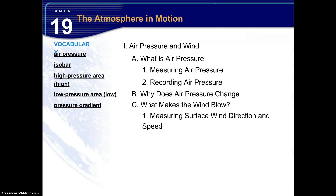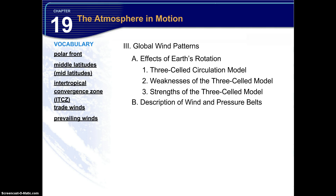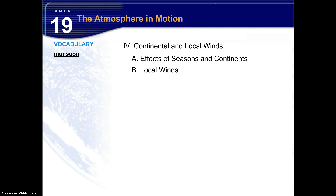Let's review all four sections of Chapter 19, the atmosphere and motion. First, try the 19.4 section review questions one through six to get a better idea of the terms. Then you can overview the chapter: 19.1 was air pressure and wind — what is air pressure, measuring and recording it, why it changes, and what makes wind blow. 19.2 was the Coriolis effect and how it affects winds, including friction and topography. 19.3 was global wind patterns — effects of Earth's rotation, the three-cell circulation model, and wind and pressure belts, with the ITCZ being prominent. And 19.4 was continental and local winds — monsoons and land breeze versus sea breeze. Thank you for your time, and if you have any questions, let us know.